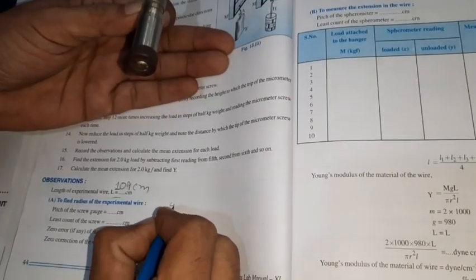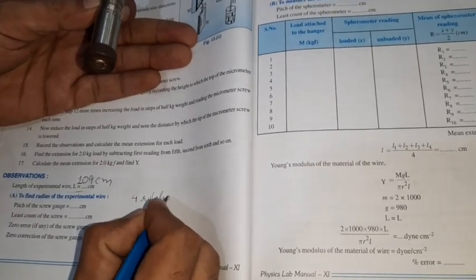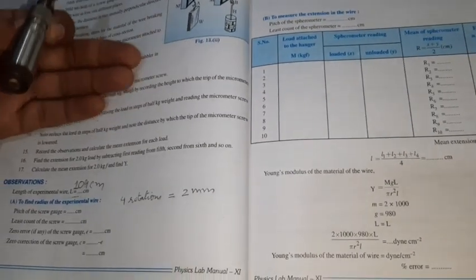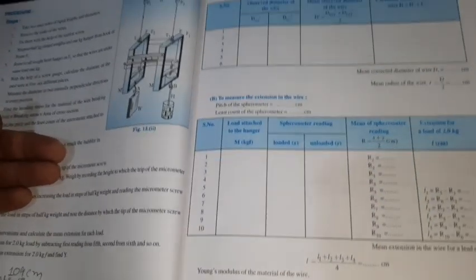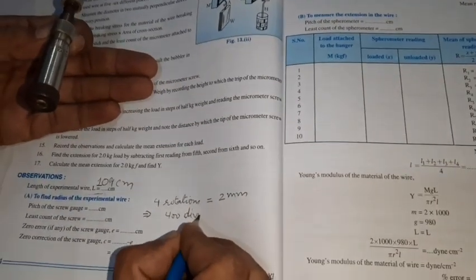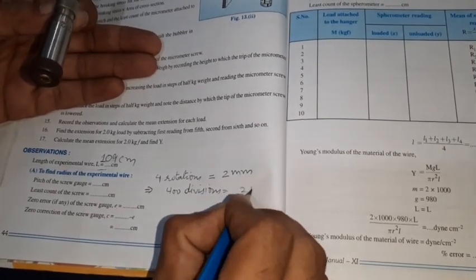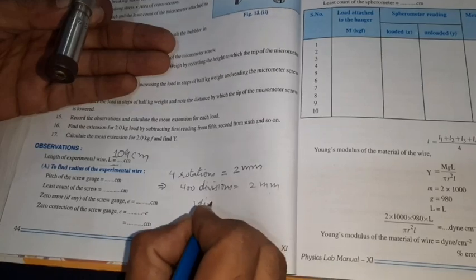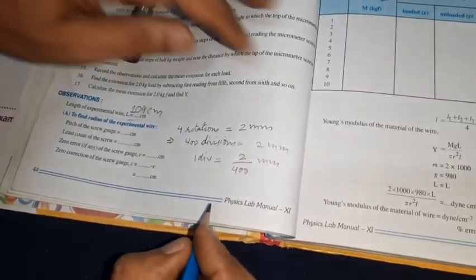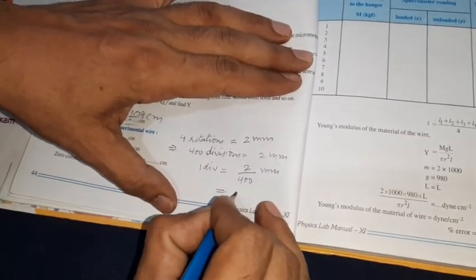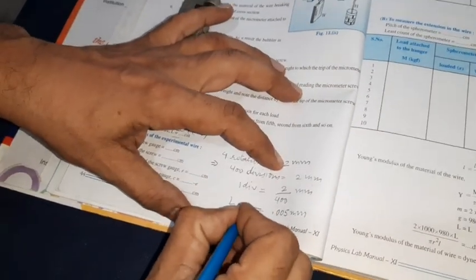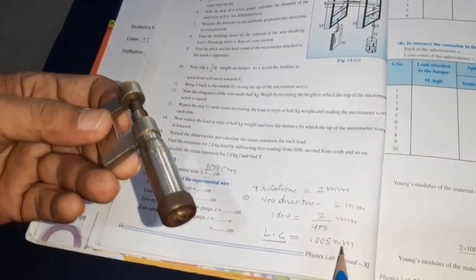Four rotations equals two millimeters, so it means four hundred divisions equal to two millimeters. So one division will be equal to two over four hundred millimeters. We will get 0.005 millimeters. So the least count of the screw gauge is 0.005 millimeters.